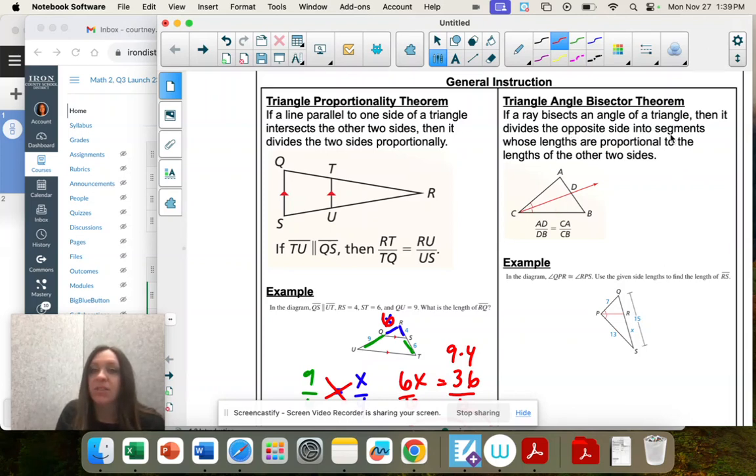Then it divides the opposite sides into segments whose lengths are proportional to the others. So AD is proportional to DB, and then CA is proportional to CB, and those create the same ratio.